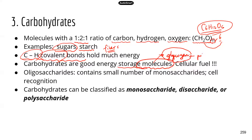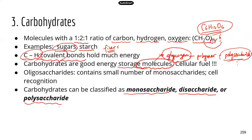Glycogen is actually a polymer because it's made up of many, many glucose molecules. Now carbohydrates can be classified as monosaccharide, disaccharide, and polysaccharide. Mono means one, so monosaccharides are single sugar units such as glucose and fructose. Di means two, so disaccharides are molecules made up of two monosaccharides. Poly means many, so polysaccharide molecules usually have many monosaccharides in their structure.